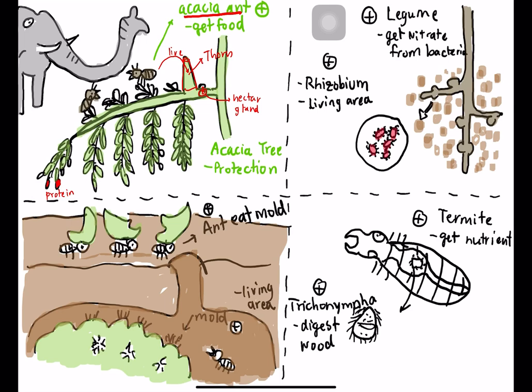In the legume plant and Rhizobium mutualism, inside the root you will see a nodule structure. Inside the nodules, when you cut them open, you see the red bacteria called Rhizobium. Rhizobium does not like oxygen, so it stays inside the nodules. The Rhizobium uses the nitrogen fixation process to turn nitrogen in the air into a form that the plant can use.